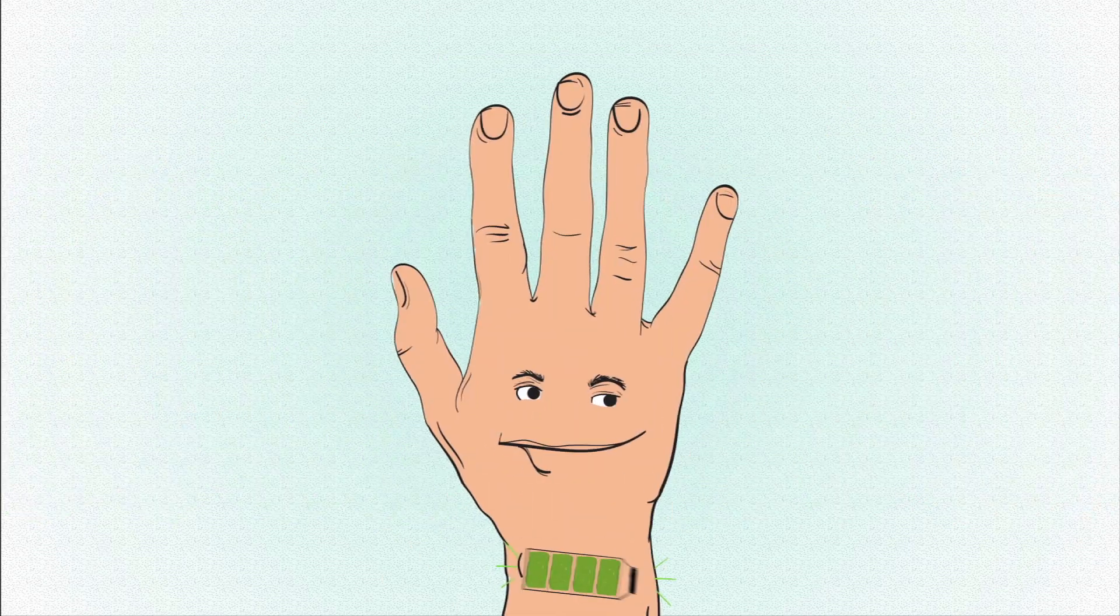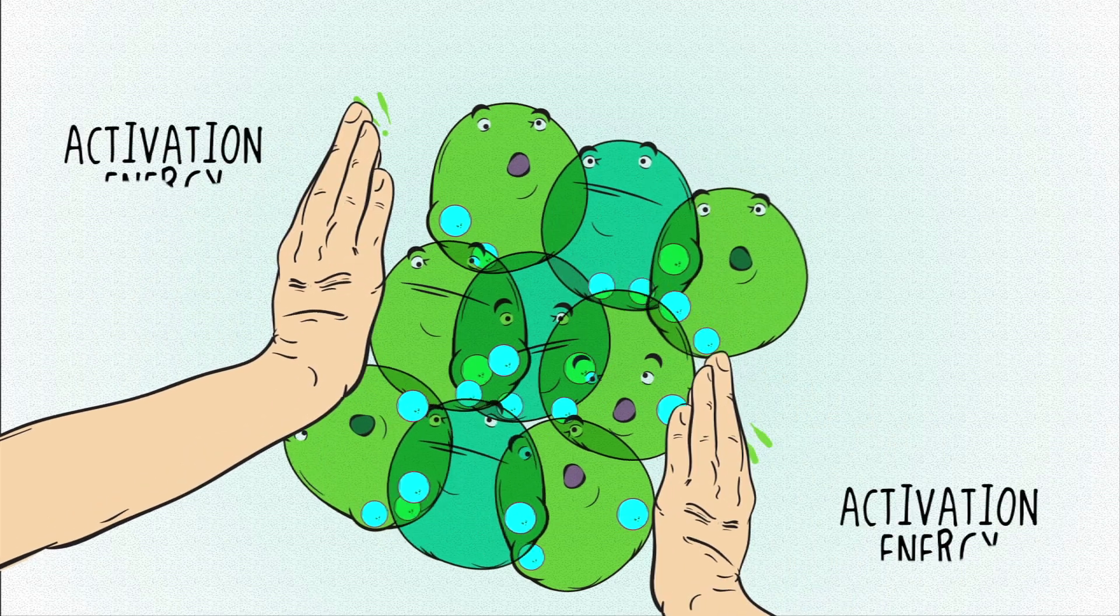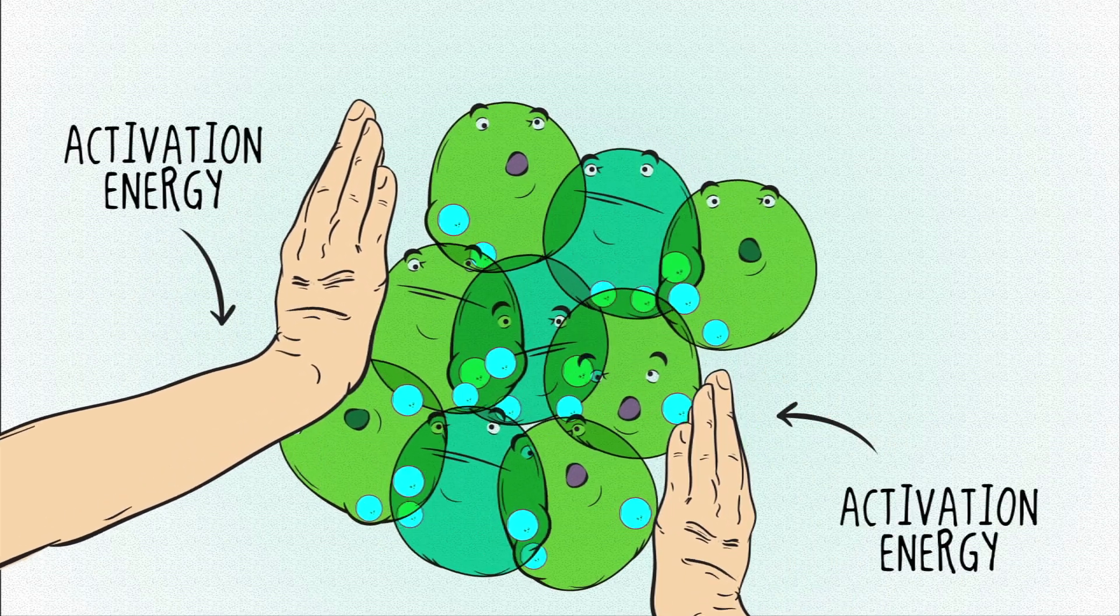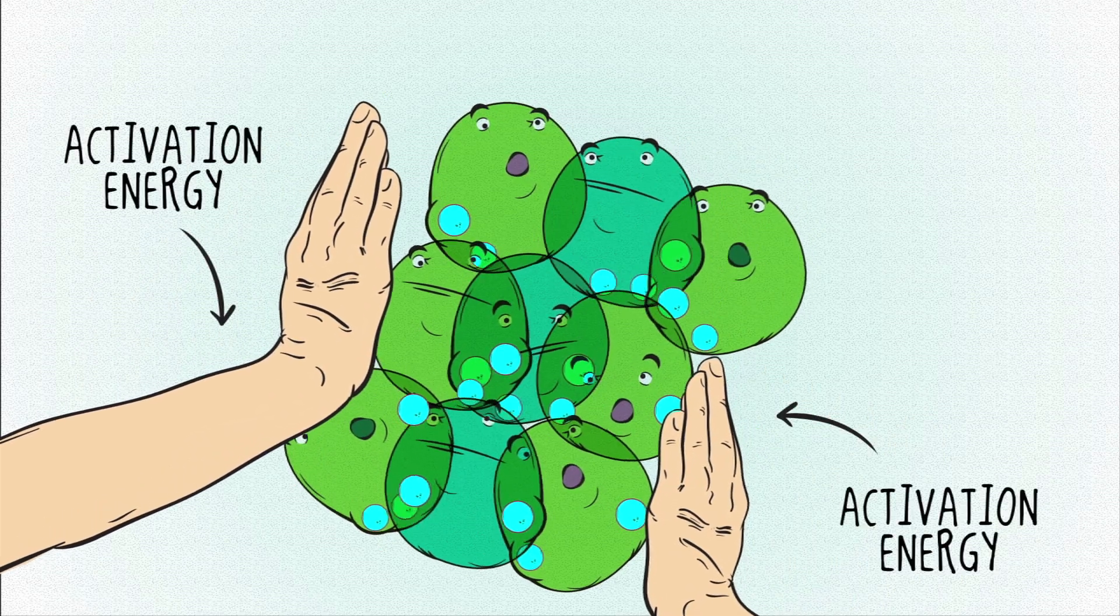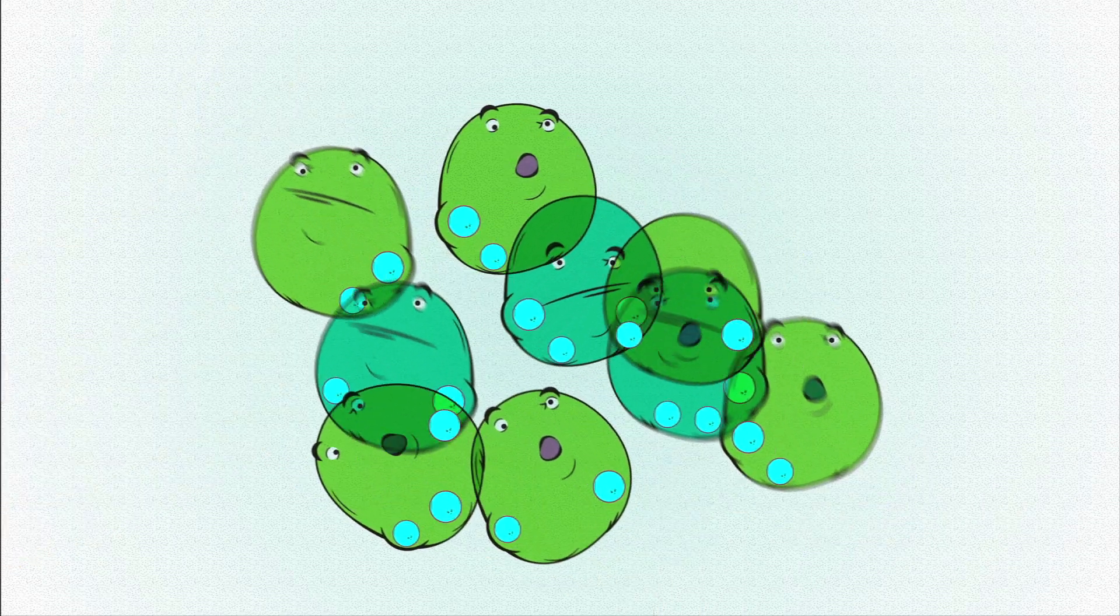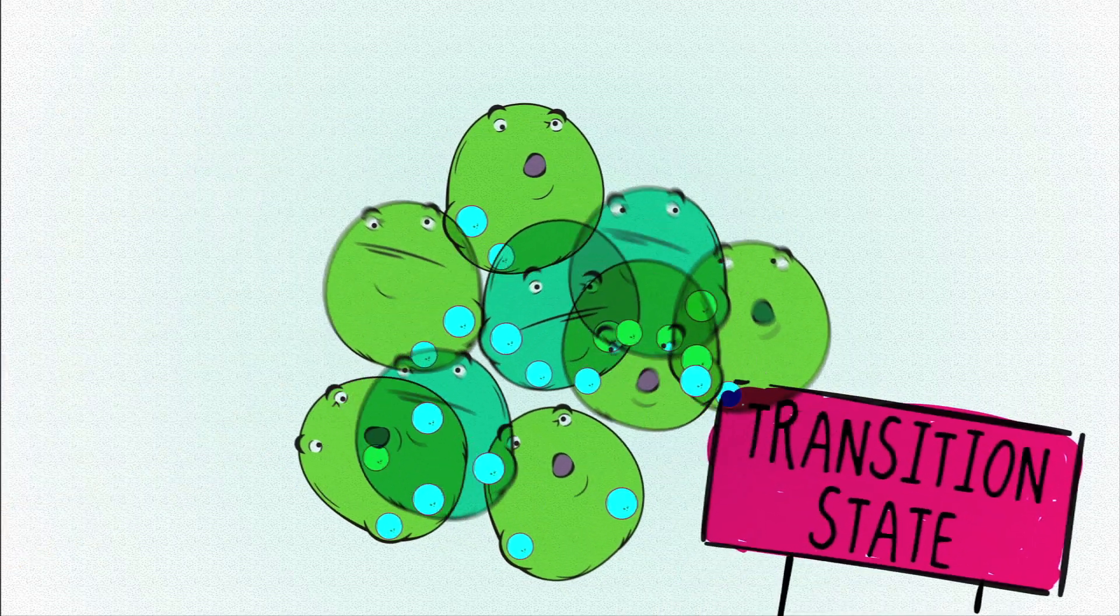This breakup is where the molecules need a hand. This initial kickstart is known as activation energy. It's used to destabilize the molecule, to push the bonds between the atoms to a place where they are ready to break. This unstable state is known as the molecule's transition state.